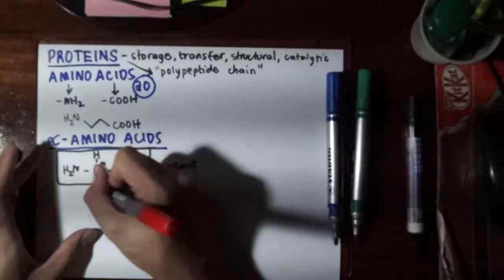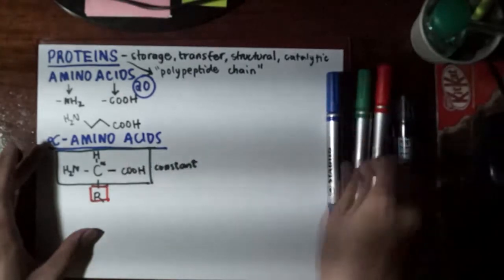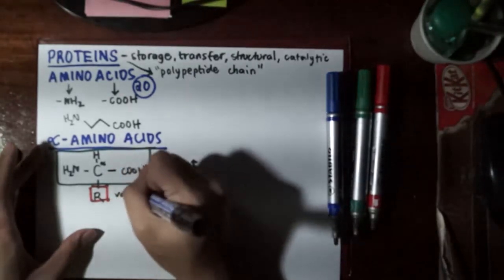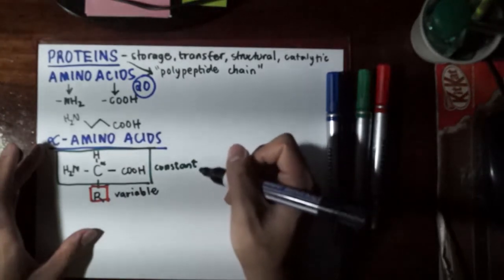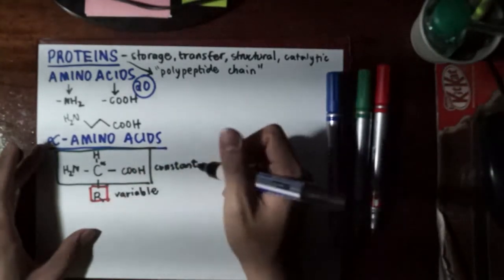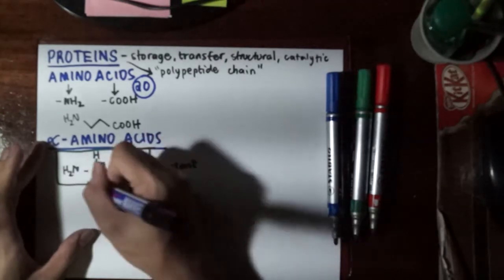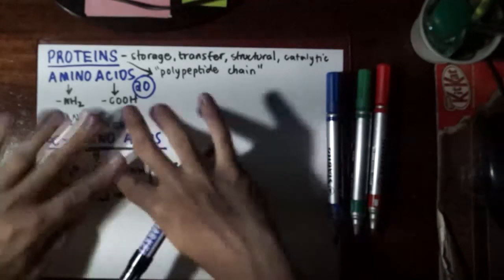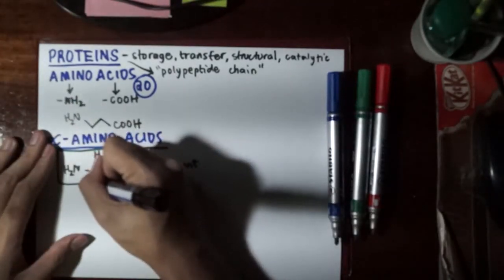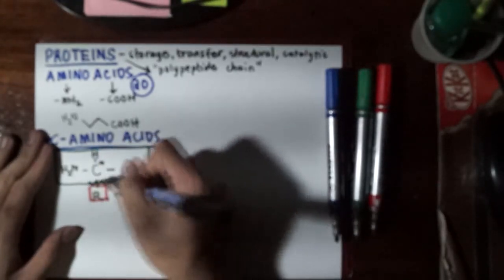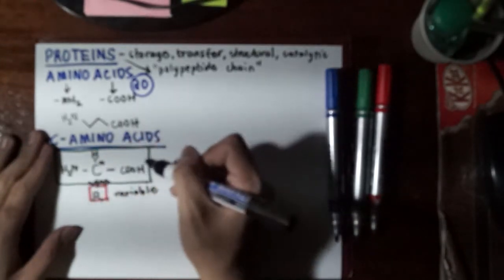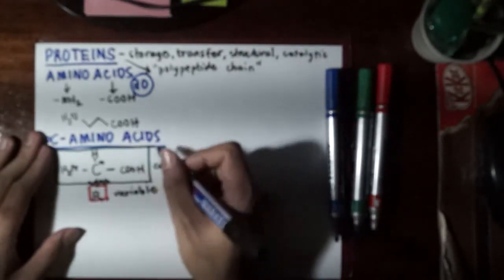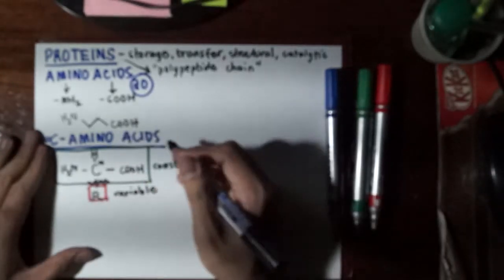This R group is the only thing that's differing from the 20 amino acids, the variable one. Later when I discuss the amino acids, since we have these in all amino acids, I won't draw the constant part anymore and I will just put this wavy line and just draw the variable ones. They're the only things that differ the 20 amino acids from each other.